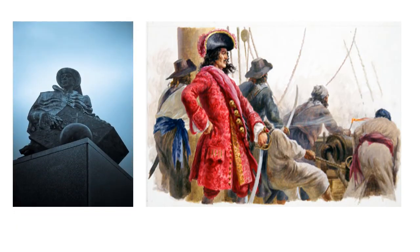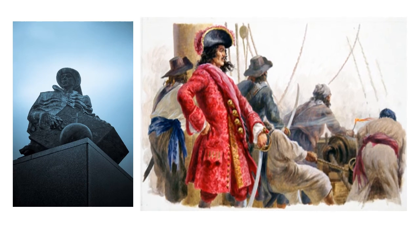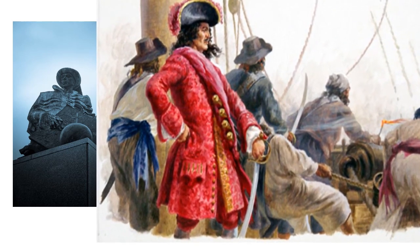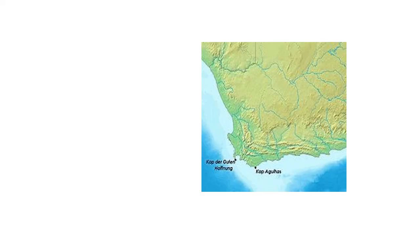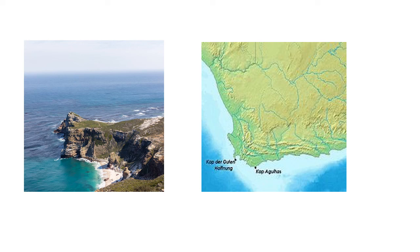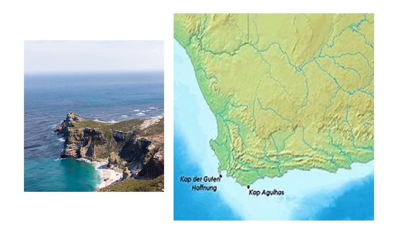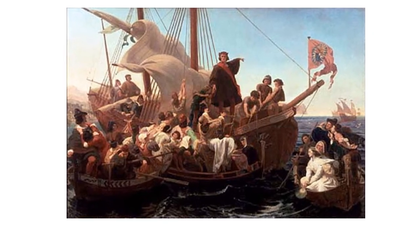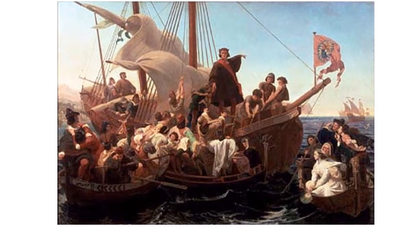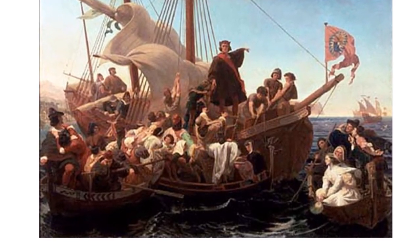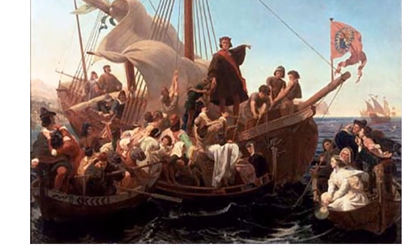Prince Henry, the navigator of Portugal, financed many expeditions and sent sailors to explore the west coast of Africa. In 1488, Bartholomew Diaz sailed down the west coast of Africa, reached the southern tip, and named it the Cape of Good Hope. In 1497, Vasco da Gama sailed to the eastern coast of Africa and crossed the Indian Ocean, reaching Calicut in India in 1498. In 1492, Christopher Columbus, an Italian explorer, discovered America.